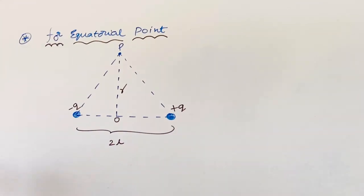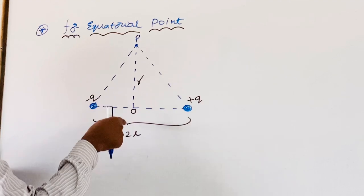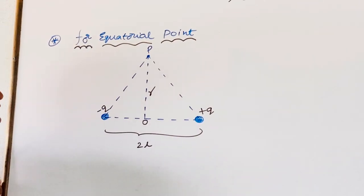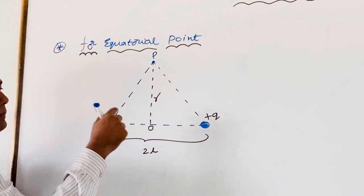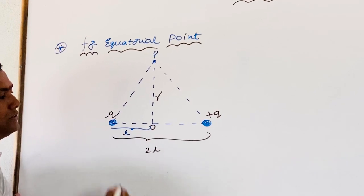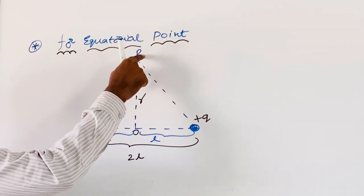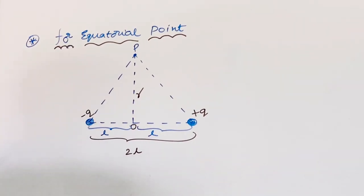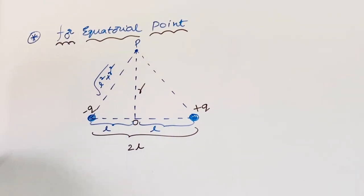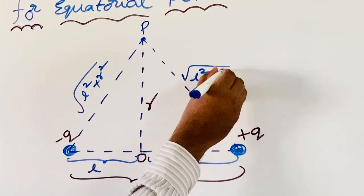First of all, we can see this is an electric dipole having total length 2L. We are seeing one point P lying on the equatorial point — nothing but on the perpendicular bisector of this dipole. O is the center of the dipole. Since OP is the perpendicular bisector, the distance from O to -Q is L, and from O to +Q is also L. With Pythagoras theorem, the distance from either charge to point P is √(L² + R²).